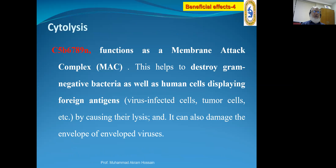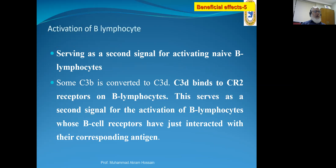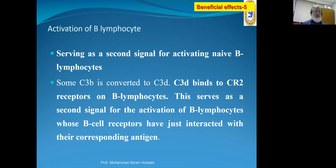Cytolysis: C5b6789 functions as the membrane attack complex and helps destroy gram-negative bacteria as well as human cells displaying foreign antigens — like virus-infected cells and tumor cells — by causing their lysis. It can also damage the envelope of enveloped viruses. Complement also plays a role in activation of naive B-lymphocytes: some C3b is converted to C3d, which binds to CR2 receptors on B-lymphocytes, serving as a second signal for B-lymphocyte activation whose B-cell receptors have just interacted with their corresponding antigen.